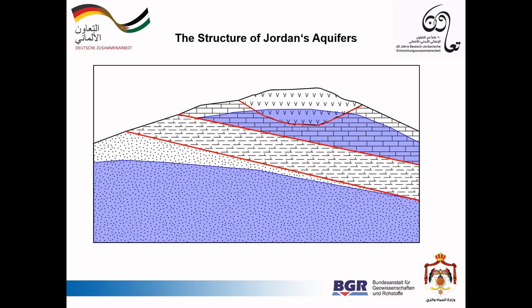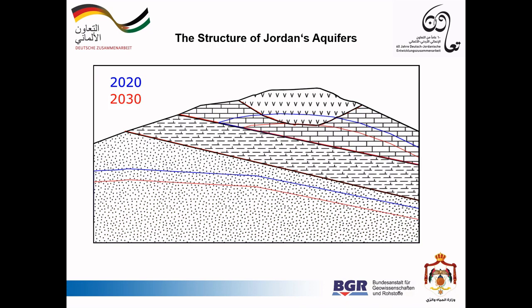It is very important to know precisely where these aquifers and aquitards are underground for the management of groundwater — for instance, to determine a good location for a new well, to calculate how much water is left in an aquifer, or to develop models and estimate how the groundwater will change in the future.